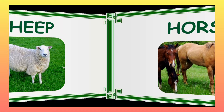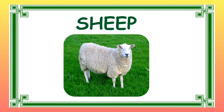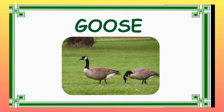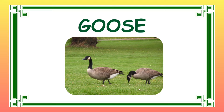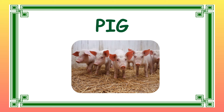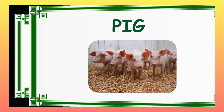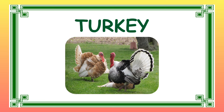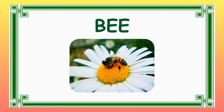Sheep. They are mainly raised for their wool and meat. Goose. Are domesticated for their meat, feathers and occasionally for guard duties. Pig. Pigs, also known as swine, are raised for their meat. The meat is called pork. Turkey. Turkeys are raised for their meat, particularly during Thanksgiving and other festival occasions. Bees. They are raised for their honey.